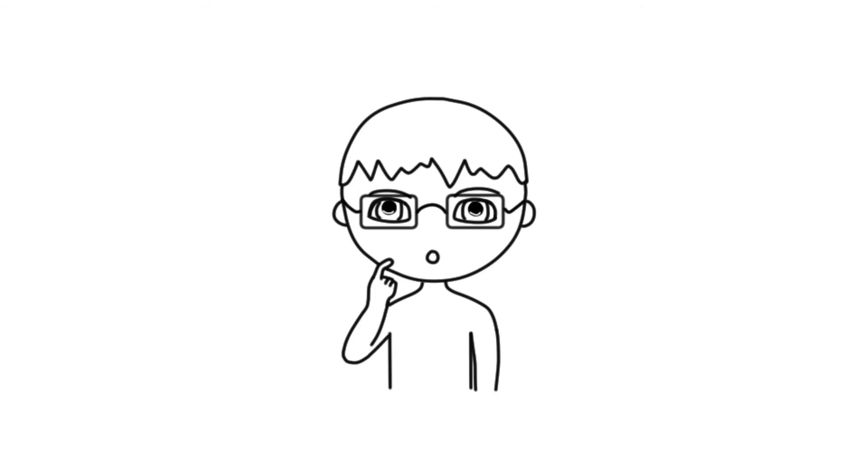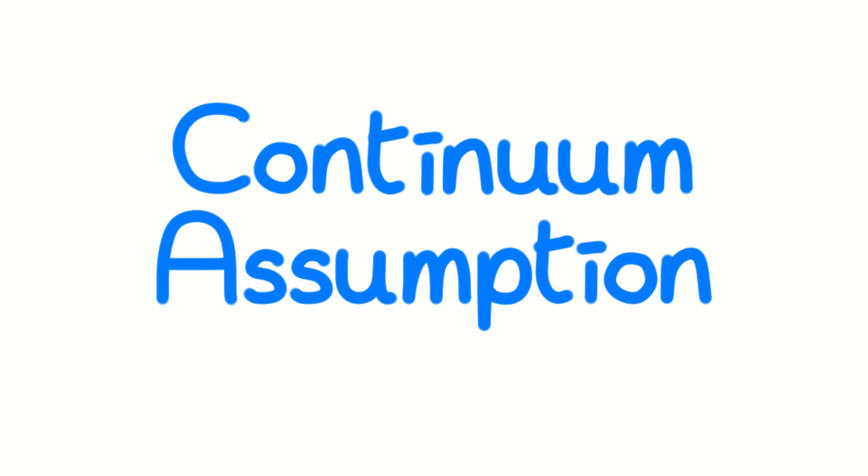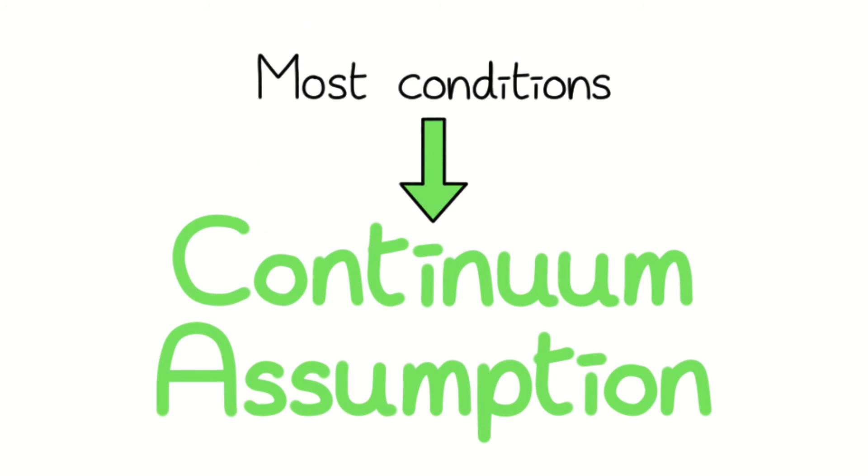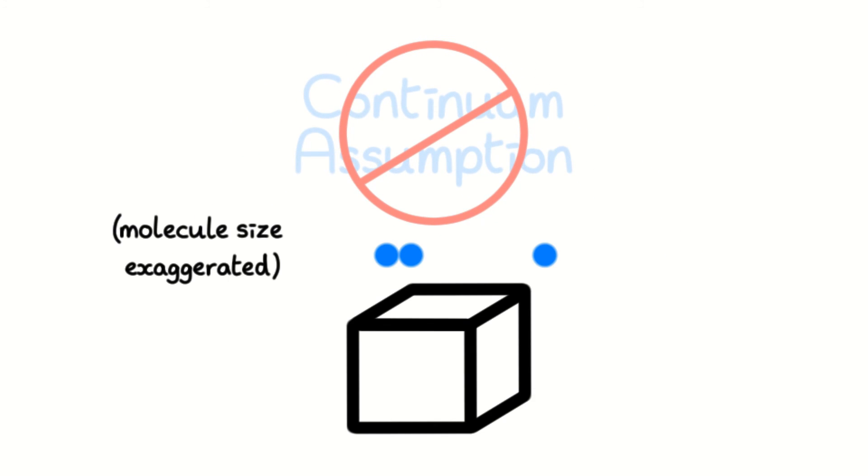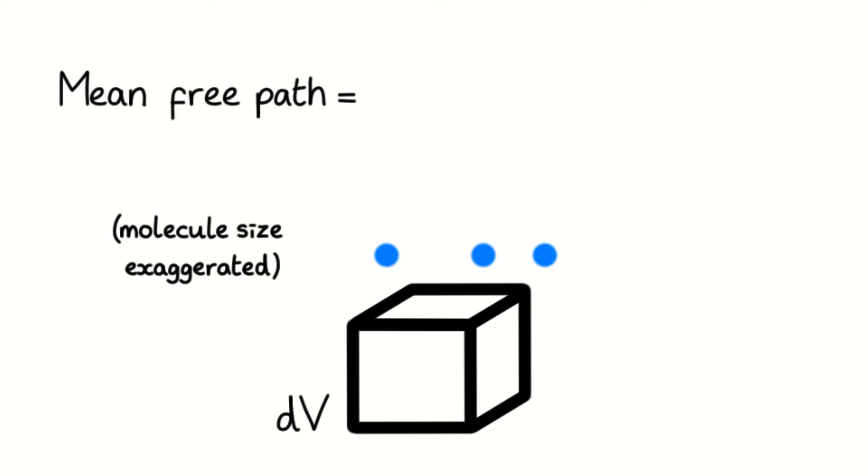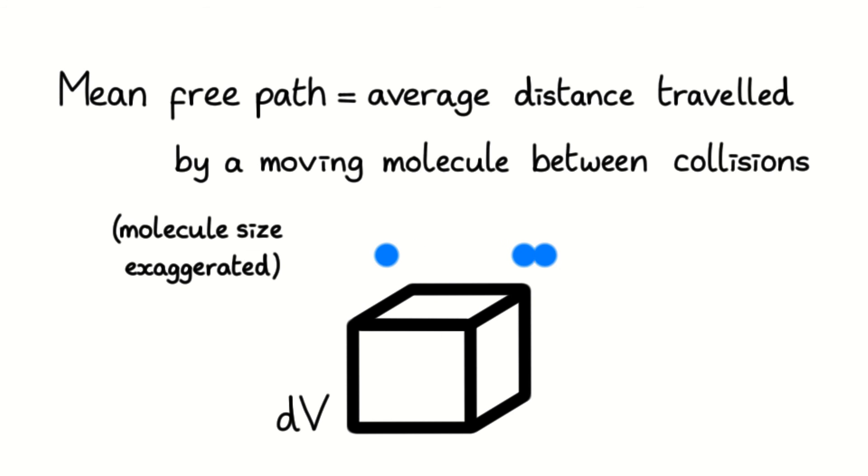There is one caveat. The continuum assumption is valid under most conditions. However, it isn't applicable when the mean free path of molecules becomes comparable to the size of the volume dV that you're using. The mean free path is the average distance travelled by a moving molecule between collisions.